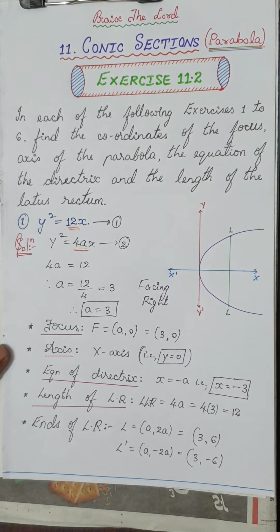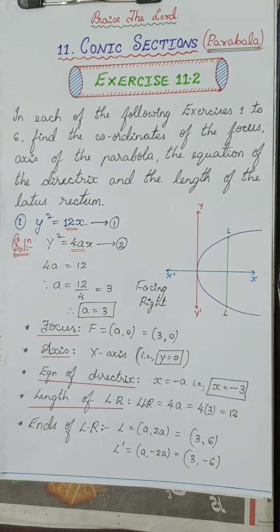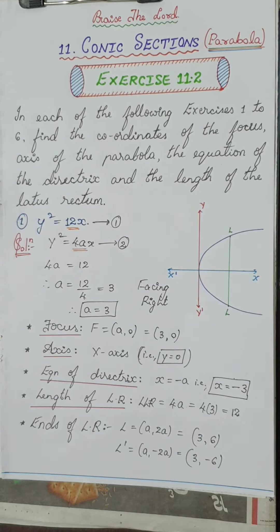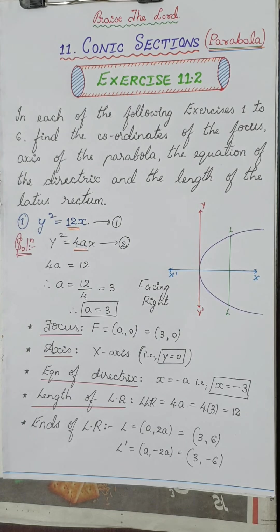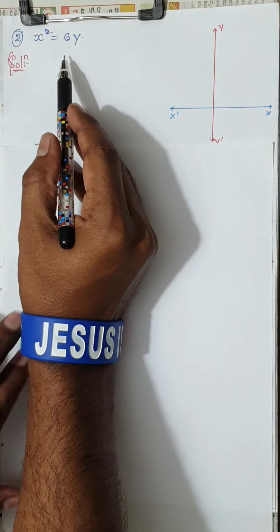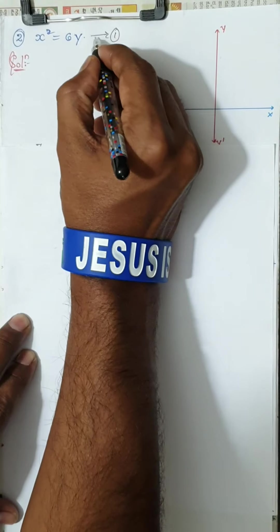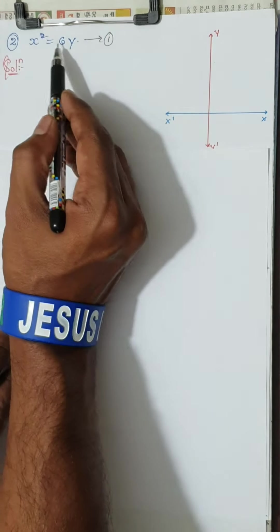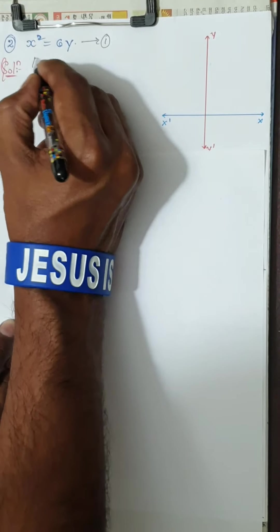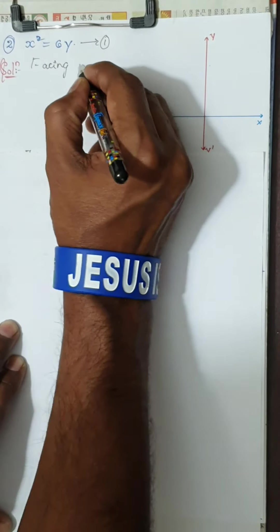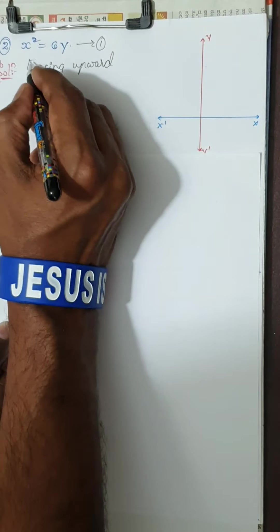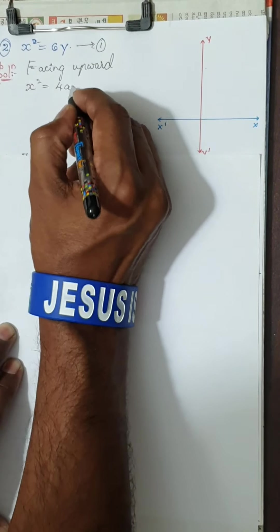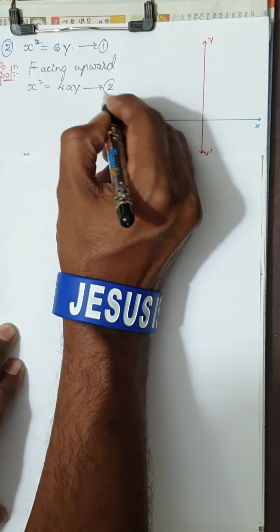Let's take up the second question. The parabola given is x² = 6y. Since the square is for x and the y-coefficient is positive, the parabola is facing upward. The standard equation for an upward-facing parabola is x² = 4ay. Take this as equation 2.